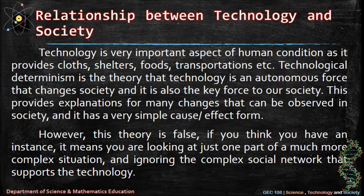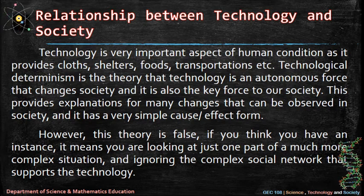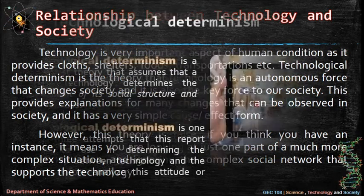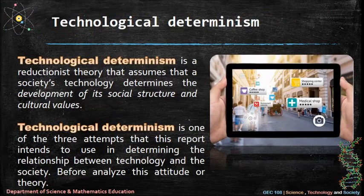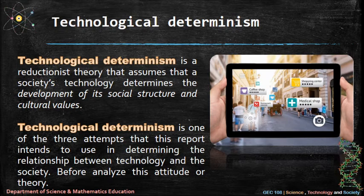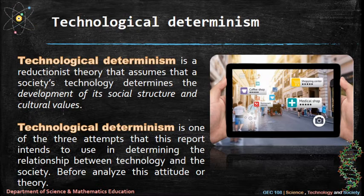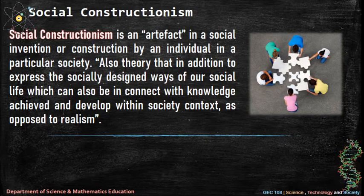Technological determinism provides explanations for many changes that can be observed in society and has a very simple cause-effect form. However, this theory is considered false — if you think you have an instance, it means you are looking at just one part of a much more complex situation and ignoring the complex social network that supports the technology. Technological determinism is a reductionist theory that assumes a society's technology determines the development of its social structure and cultural values.